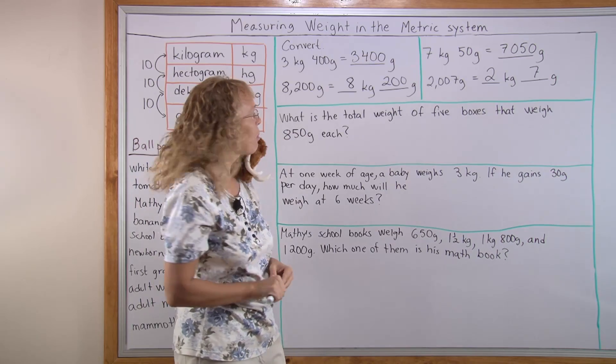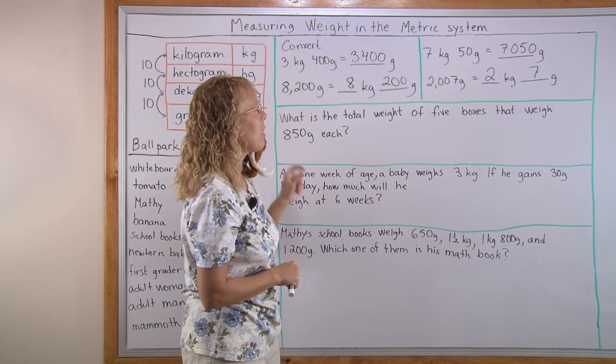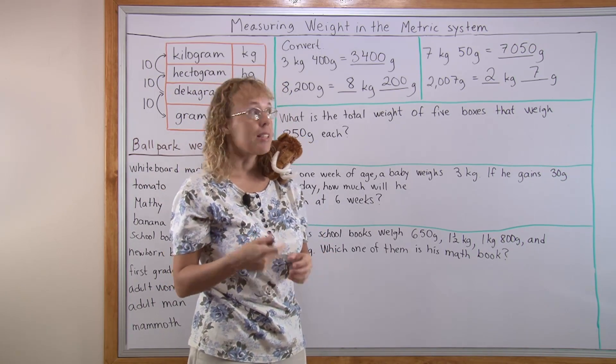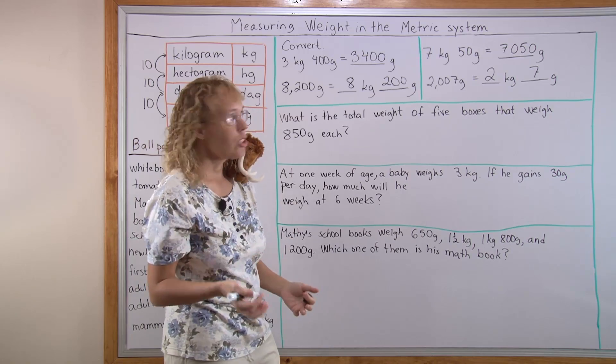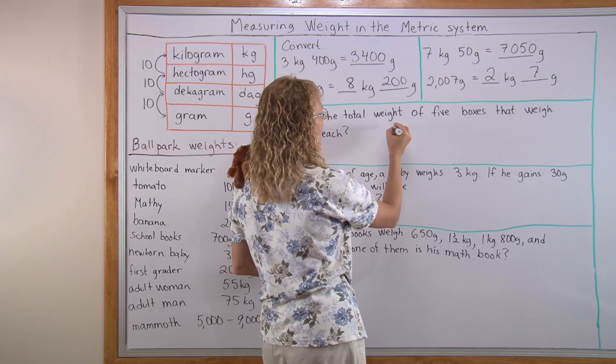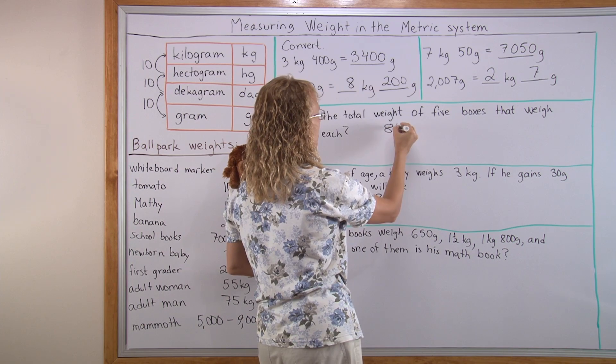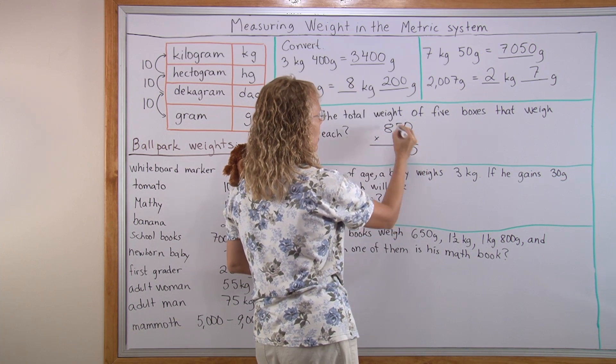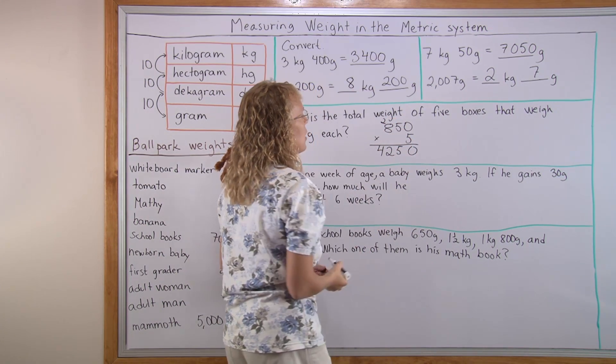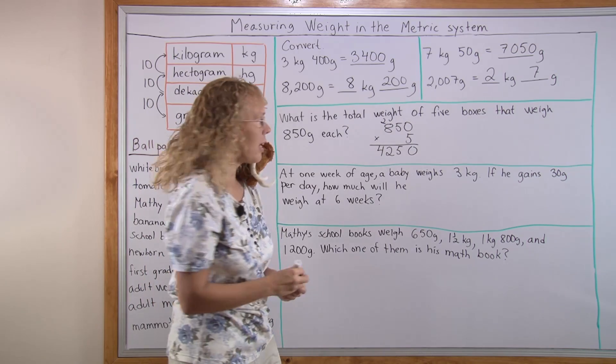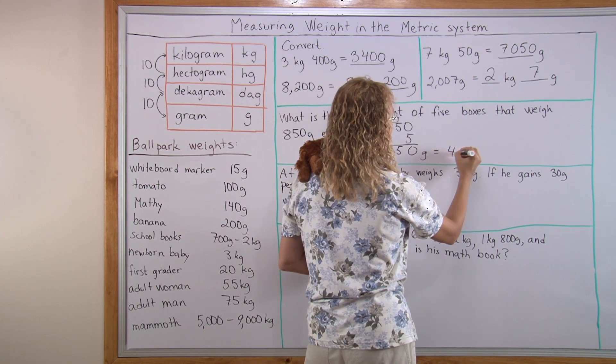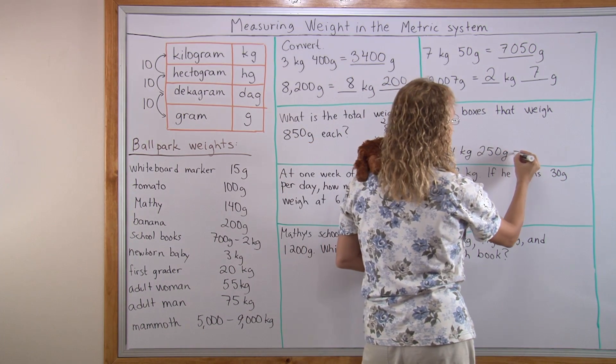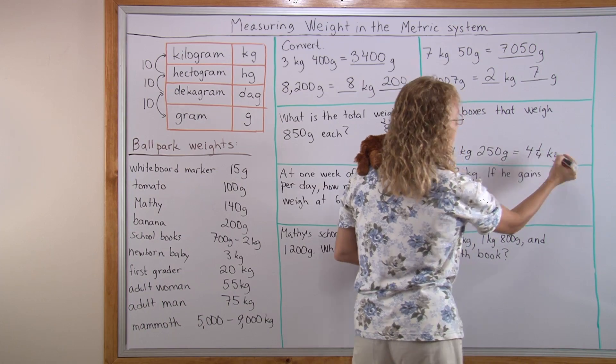And then we'll solve a few word problems. What's the total weight of 5 boxes that weigh 850 grams each. We will need to give the answer in kilograms and grams. This is a multiplication problem. 850 times 5. I have zero here. Then 25 and 42. So the total weight is 4,250 grams. I'm going to write it as 4 kilograms, 250 grams. Or you could even write it as 4 and one-fourth kilograms.